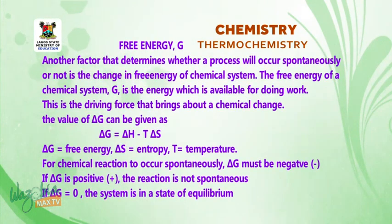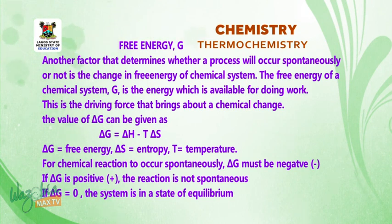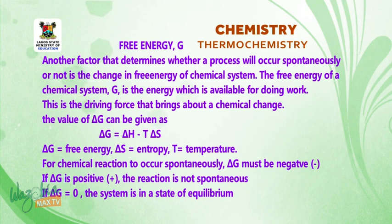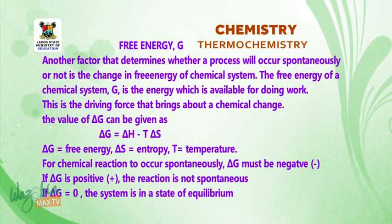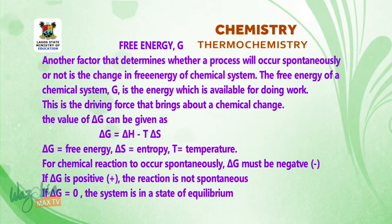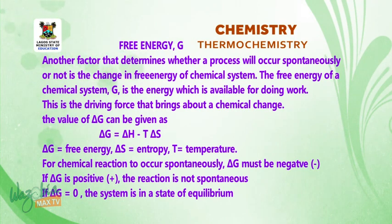Another factor that determines whether a process will occur spontaneously is the change in free energy of a chemical system. The free energy of a chemical system, G, is the energy which is available for doing work — this is the driving force that brings about a chemical change. The value of G can be given as delta G equals delta H minus T delta S, where delta G equals free energy, delta S equals change in entropy, and T equals temperature. For a chemical reaction to occur spontaneously, delta G must be negative. If delta G is positive, the reaction is not spontaneous. And if delta G equals zero, the system is in a state of equilibrium.